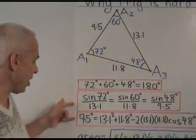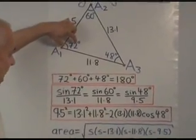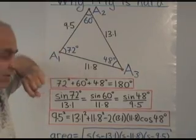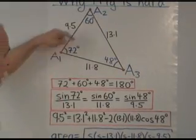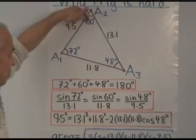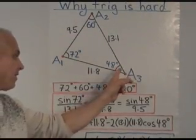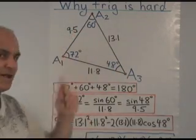Here is the sine law and the cosine law. The sine law expresses a relationship between an angle and its opposite side. So the sine of 72 divided by 13.1 is the same as the sine of 60 degrees divided by 11.8, which is also the same as the sine of 48 degrees divided by 9.5.